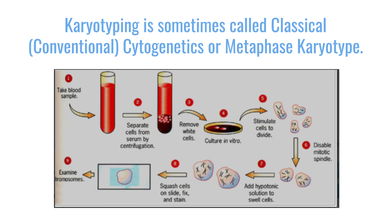There are different names for karyotyping — one is classical cytogenetics, the other is metaphase karyotype. What that test is: we take the myeloma cells in a dish, we stimulate them to divide, and when they divide we are able to capture them and we can see under the microscope even the individual chromosomes.